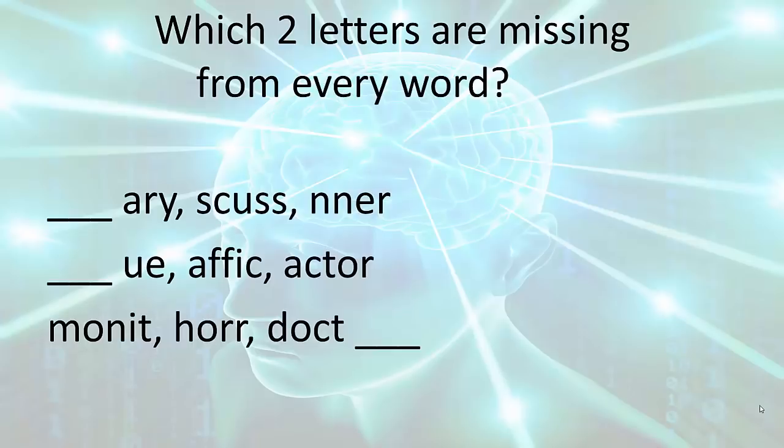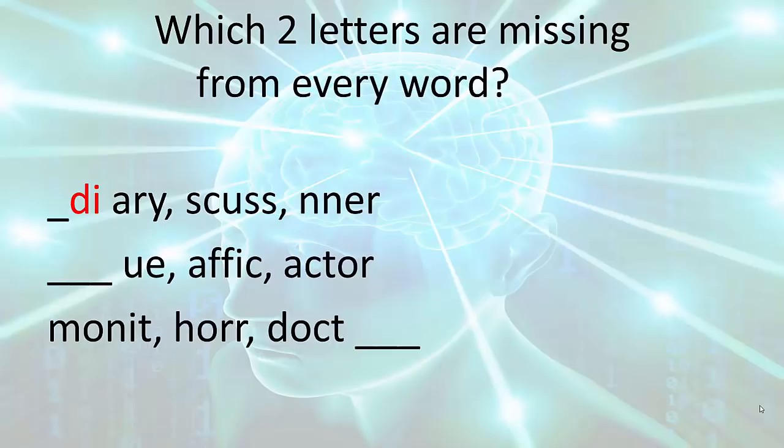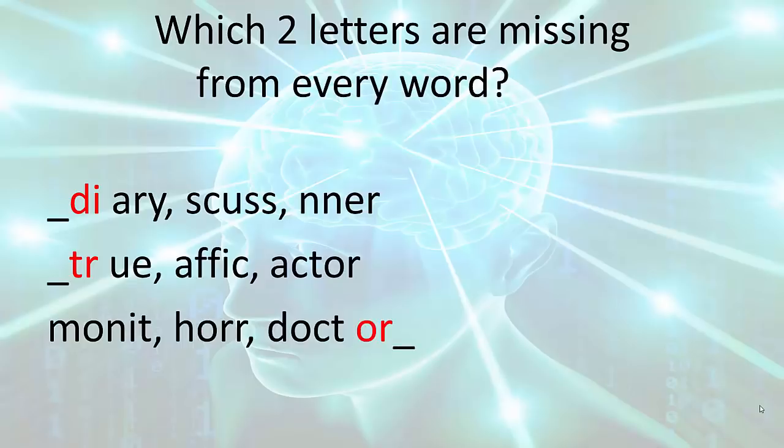Two letters, three words. Ten seconds for the first group of three words. And the two letters are di, diary, discuss, dinner. So, take 10 seconds to do the second group of words. And the letters are tr, true, traffic, tractor. And finally, two letters to finish the three words in the third group. Take 10 seconds. And the two letters are or, monitor, horror, doctor.